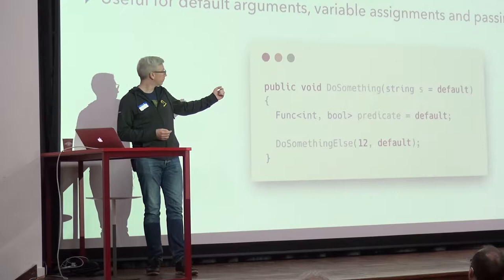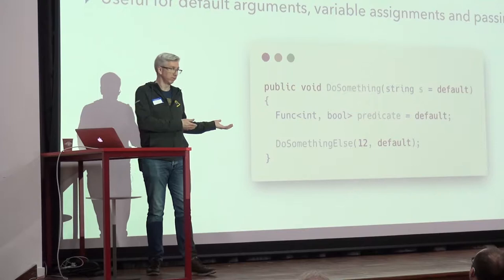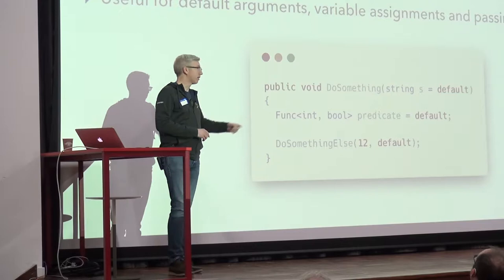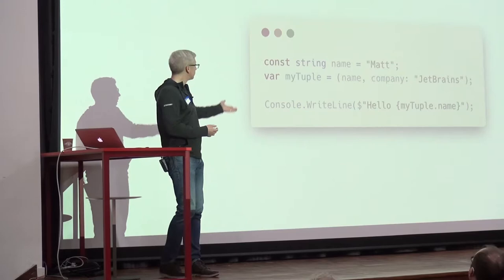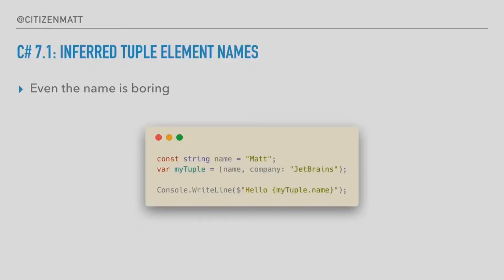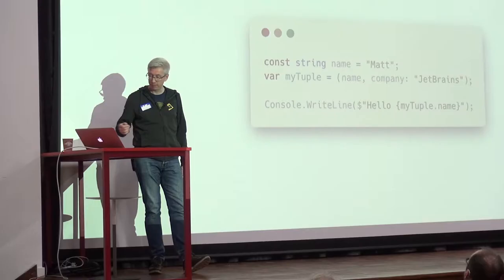Same again with variable assignments and when you're calling a method — you know what value that is, so why write `default(string)`? Inferred tuple element names: we had tuples in 7.0 where you had to give them a specific name like 'company'. Now it'll just pick up the name based on the variable name, like it does with anonymous types.